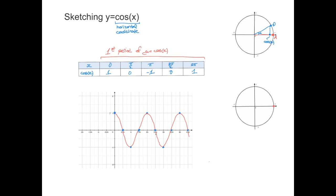We can extend the cosine curve further into positive x by following the same pattern of blue points, and also into negative values of x. Joining all these points gives us the full curve of y equals cosine of x. The key thing to remember is that all we needed was this table of values — and we'll use this same table for much more complicated sine and cosine curves. Make a note of the angles: 0, π/2, π, 3π/2, and 2π.